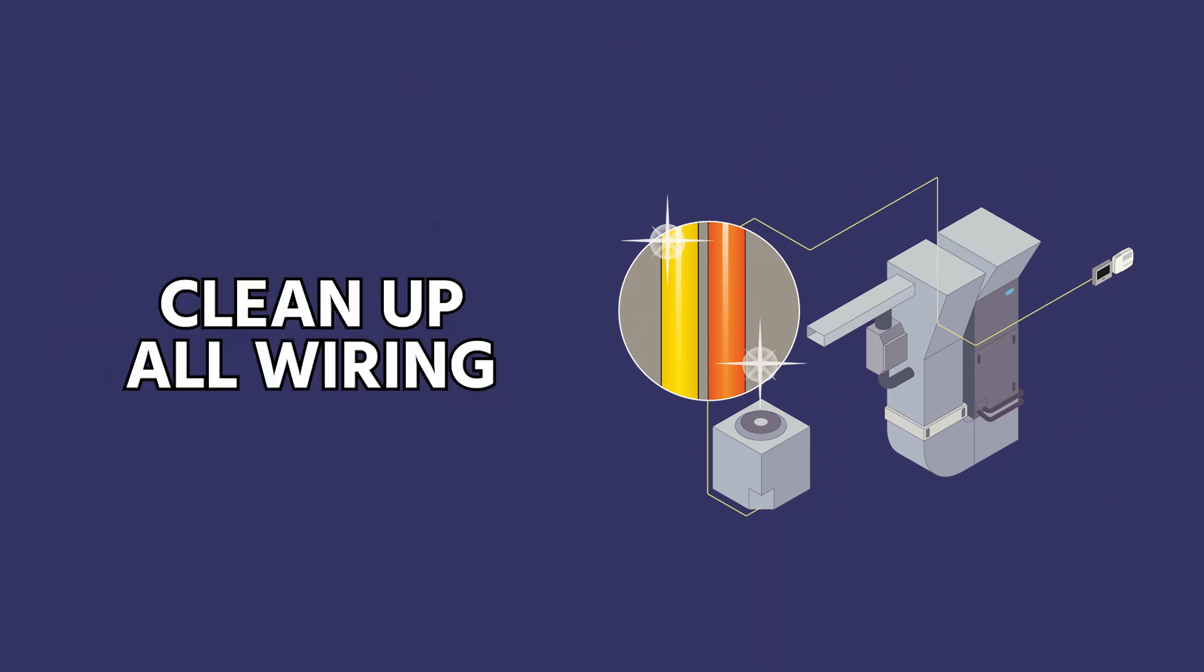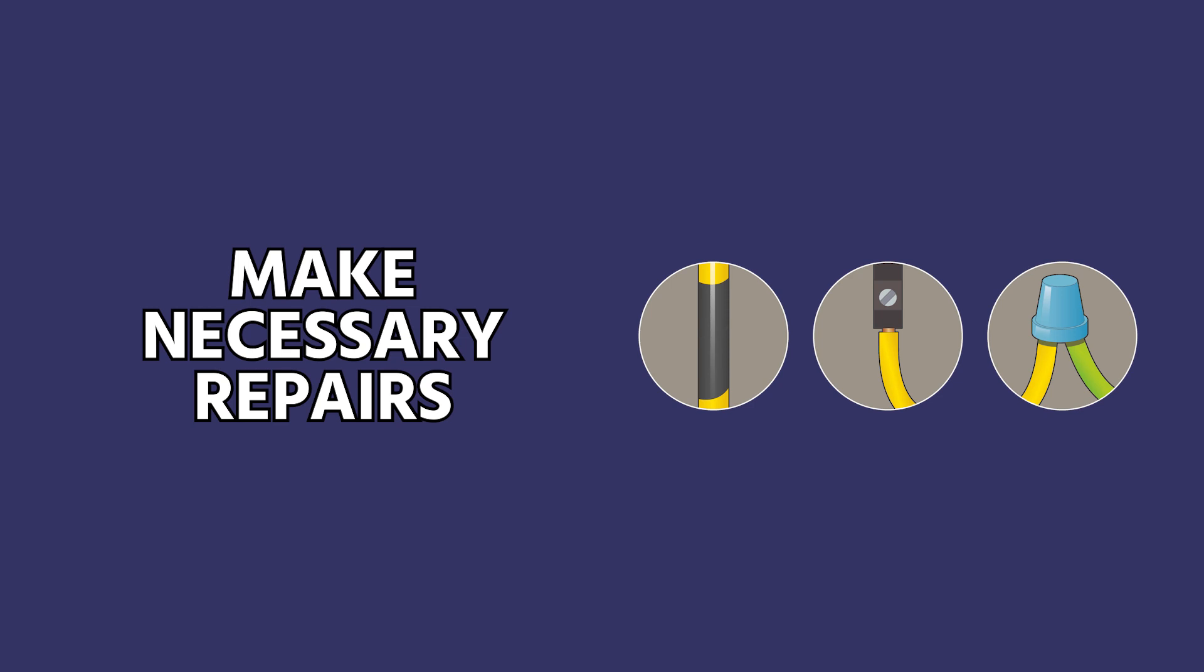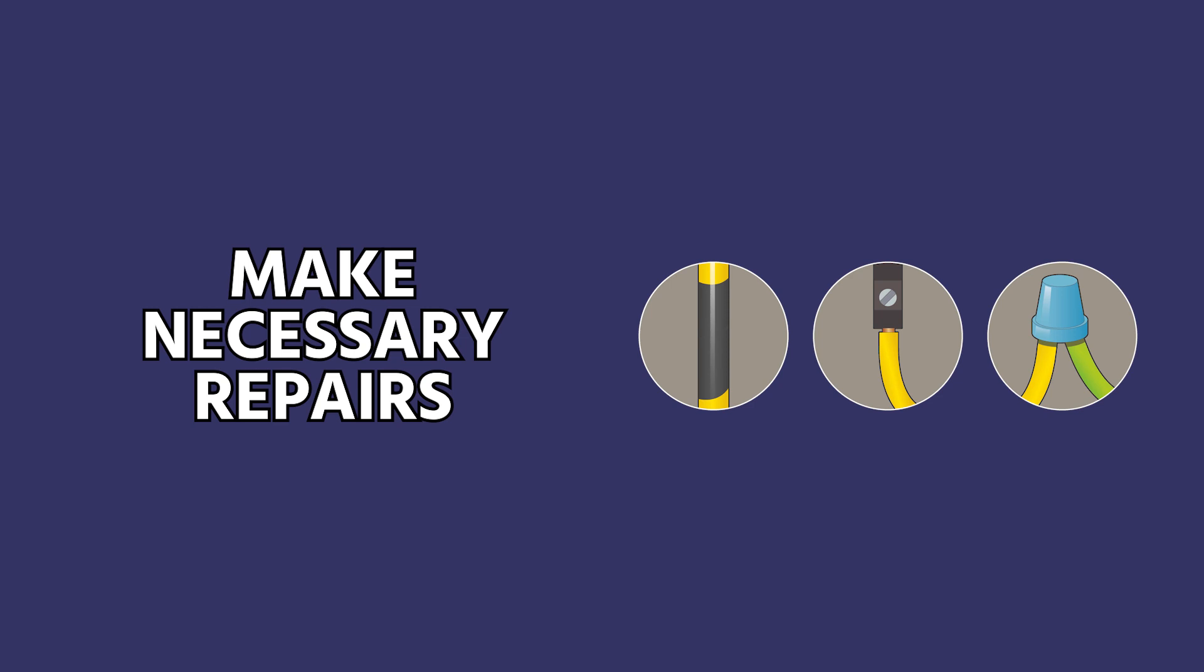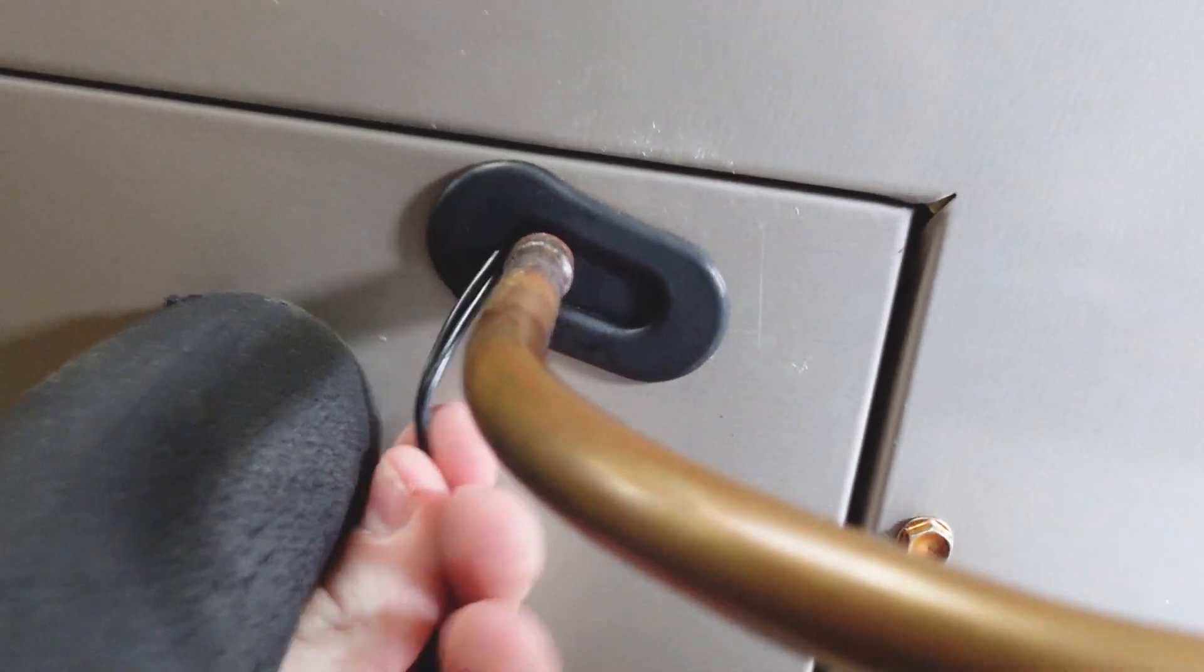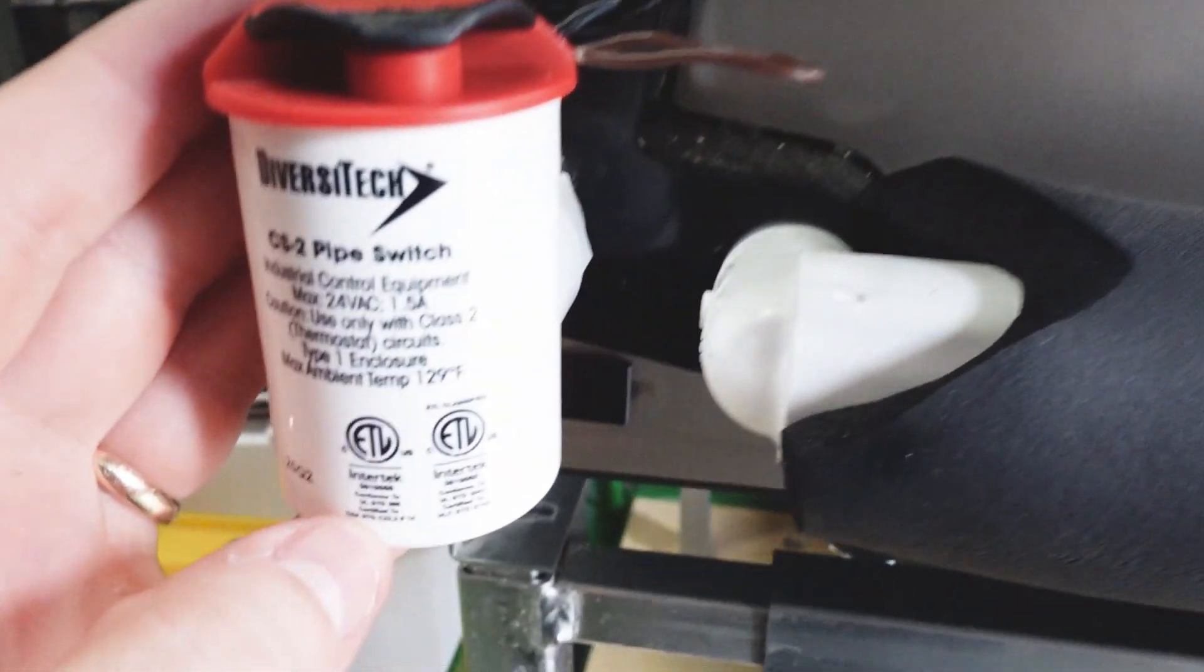In general, we would want to clean up all the wiring and make it look neat and find anything that could have caused this problem before we go ahead and put a new fuse in. Check your float switch wires. Make sure there's no damage to any of those. Maybe they could be chafing up against some tubing if they're routed improperly.